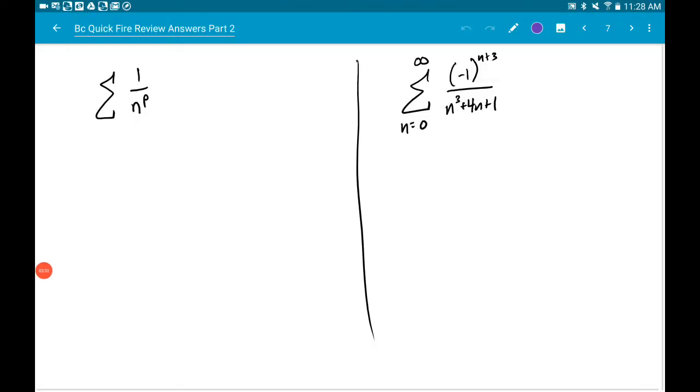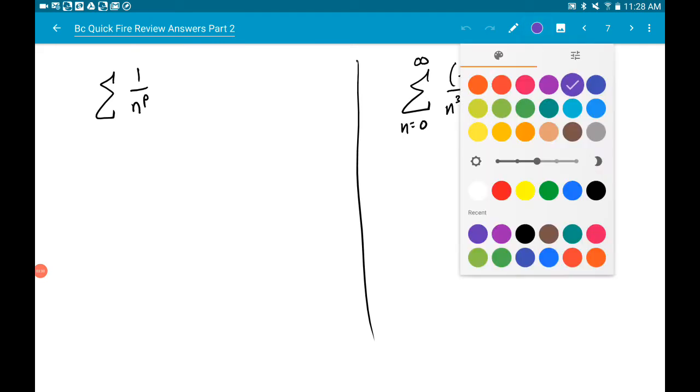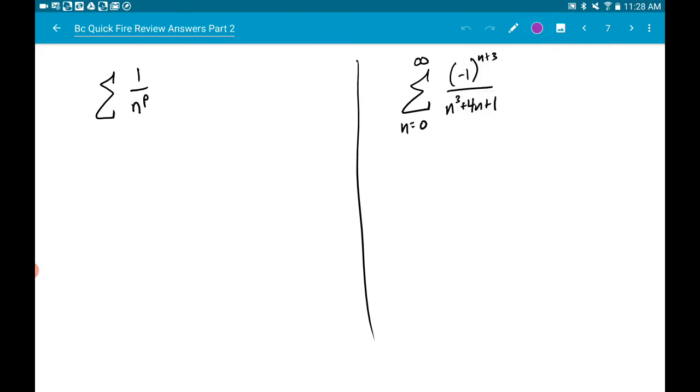All right, we're on the home stretch. The P series is kind of the most specific test. And it says if you have a series with this form, if P is strictly greater than one, it will converge. So that's cheat sheet worthy. I doubt it will show up, but you never know.